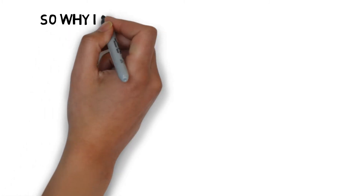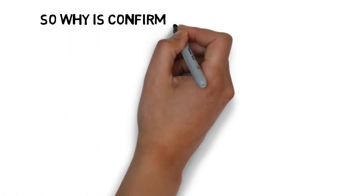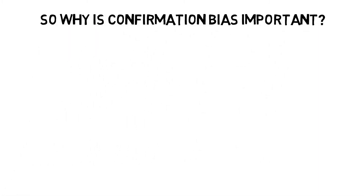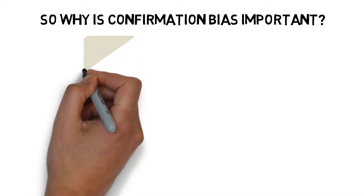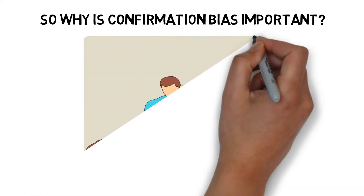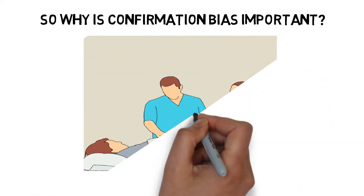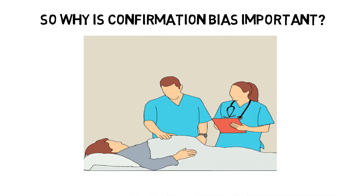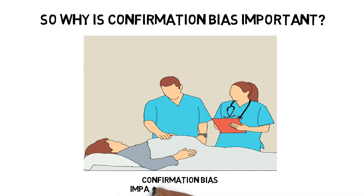So why is this important? Confirmation bias can prevent us from recognising when we are wrong or from viewing a problem from a new perspective. When our brain selectively acknowledges information that confirms our impression, we may think in a way which leads us to be incorrect and therefore cause a patient harm.